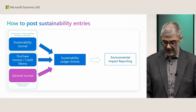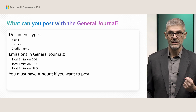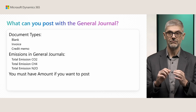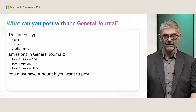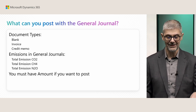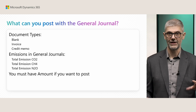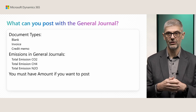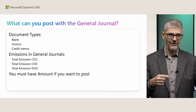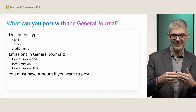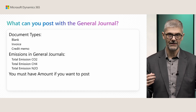Let's explain in a little more detail how you can use the general journal. There are a few directions — not limitations — for how you can use it. First, if you want to post sustainability values in general journals, you must use one of these document types: invoice, credit memo, or blank. For other document types you cannot post any emissions directly from the general journal — for example, when you are posting payments, there is typically no emission related to payments.